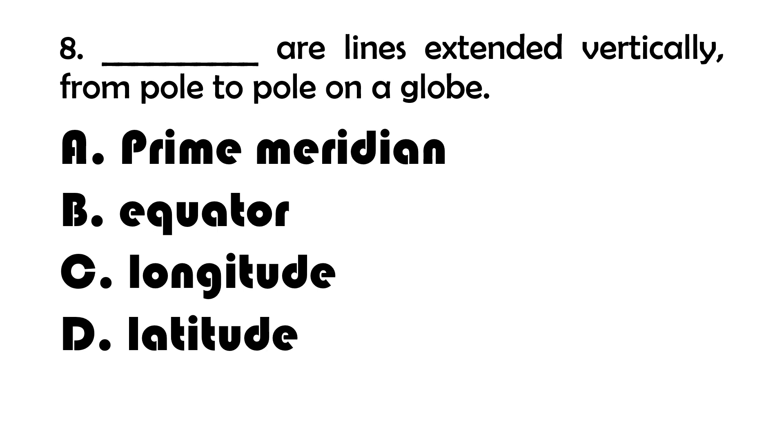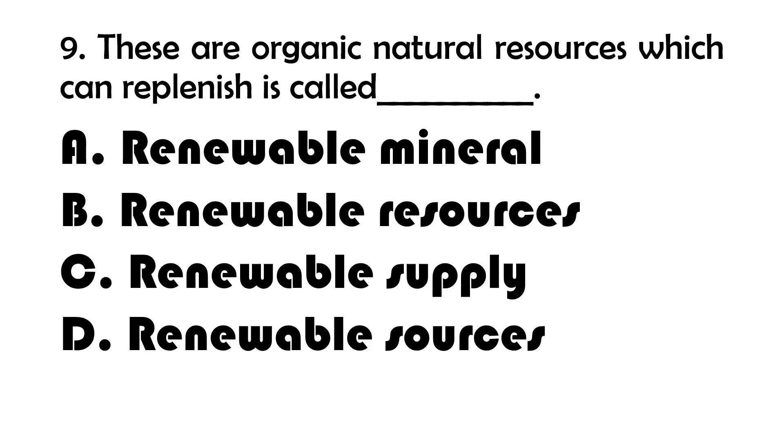Number 9. These are organic natural resources which can replenish is called blank. A. Renewable mineral. B. Renewable resources. C. Renewable supply. And letter D. Renewable sources.